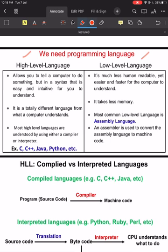High-level programming languages are the ones most developers are familiar with — for example, Java, C++, C, and Python. A high-level language allows you to tell a computer to do something in a syntax that is easy and intuitive for the programmer or human to understand, but it is completely different from what a computer understands.